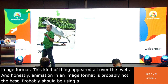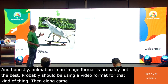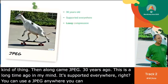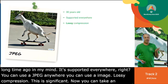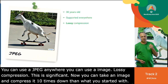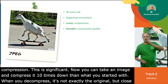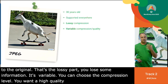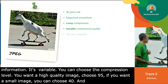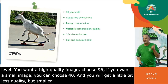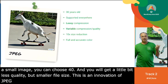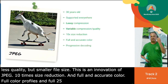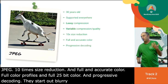Then along came JPEG, 30 years ago. It's supported everywhere. It's got lossy compression, which is pretty significant — you can take an image and compress it down to 10 times smaller, and when you decompress it, you get something very close to the original. It's also variable: you can choose your compression level — quality 95 for high quality, quality 40 for a smaller file. It also offered up to 10 times size reduction and full, accurate 24-bit color. It has progressive decoding, where JPEG images start out blurry and the details come in, so you get a sense of what the image looks like before it fully loads.